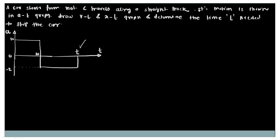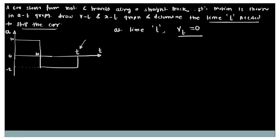At this unknown time t, we know the condition for the car's velocity. At time t, the velocity of the car — Vt — is equal to 0, because the problem asks for the time needed to stop the car. That means at this point, the velocity of the car will be 0. This is the final condition, and by using this condition we can find the corresponding time.